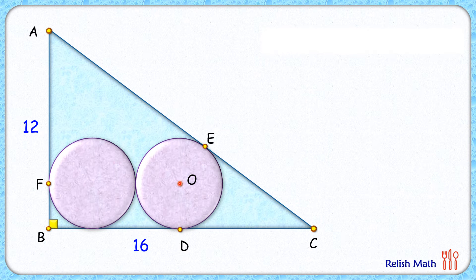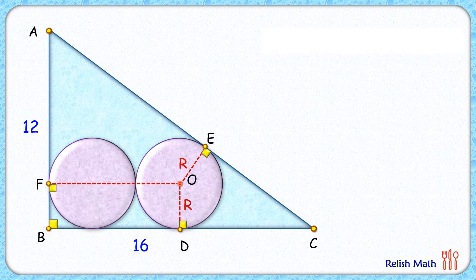Let's assume the radius of the circle is R cm. Point D is the point of tangency and we know the radius is perpendicular to the tangent, so this angle is 90 degrees. Here OE length is also R. OF length is R plus 2R, or 3R cm. By the Pythagoras theorem we can say that AC length is 20 cm.